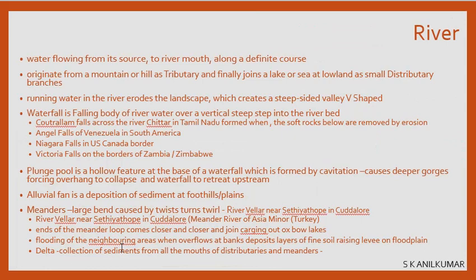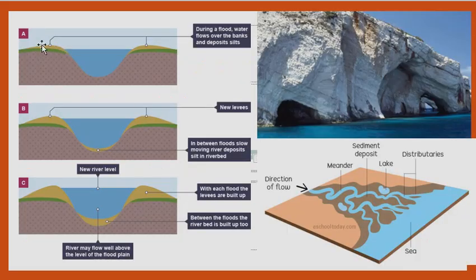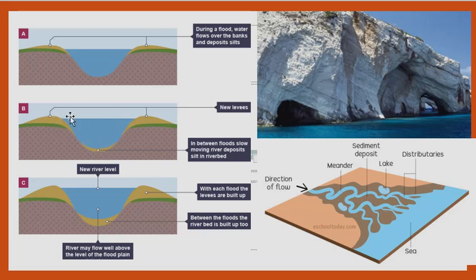When a river floods, neighboring areas are inundated and the river overflows its banks, depositing layers of fine soil — river silt — on the surrounding land. The green-colored normal land around the river receives silt deposits during floods, raising the level of that area. During normal flow, silt is deposited at the bottom of the river, raising the riverbed level over time.